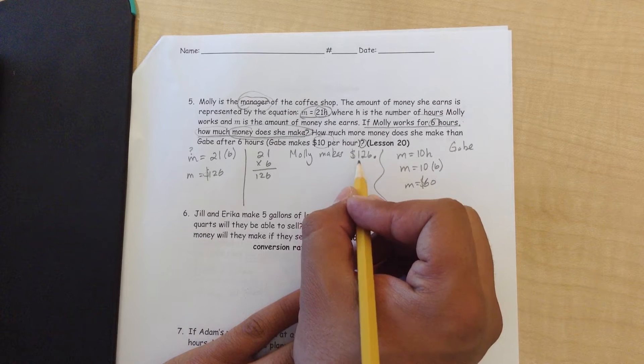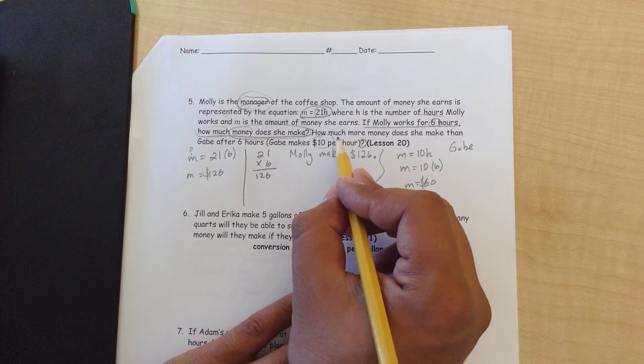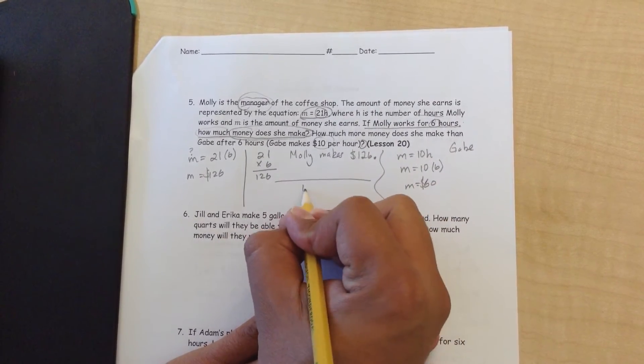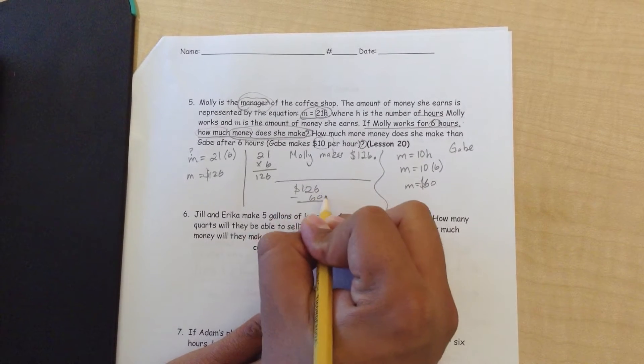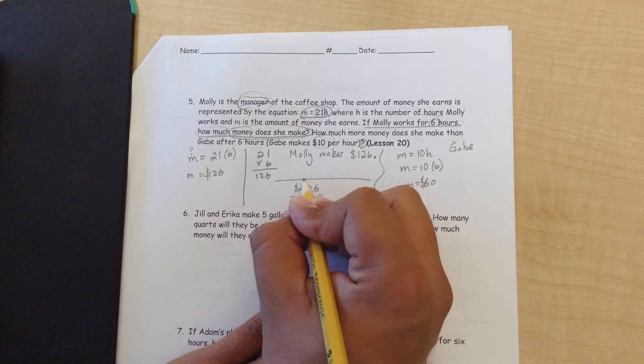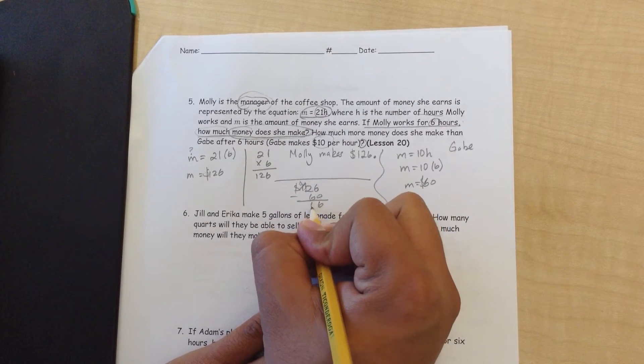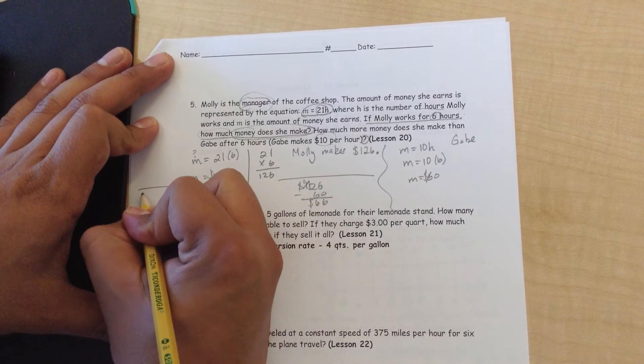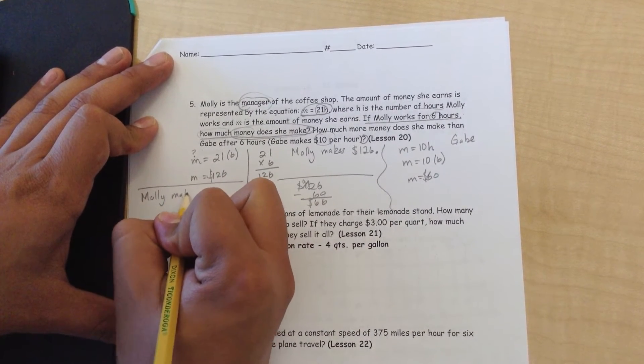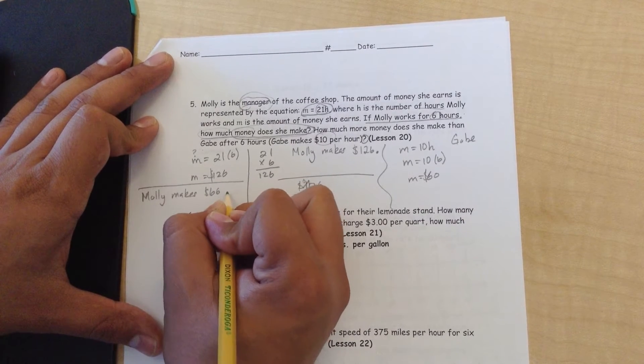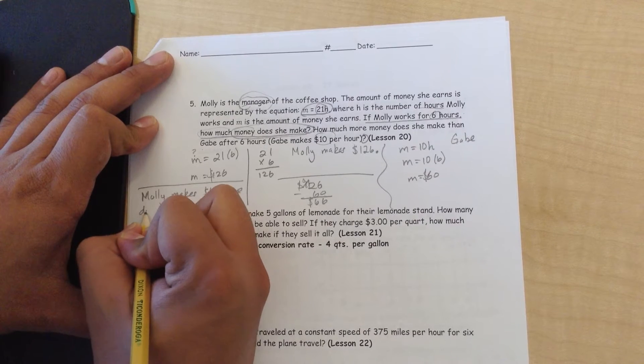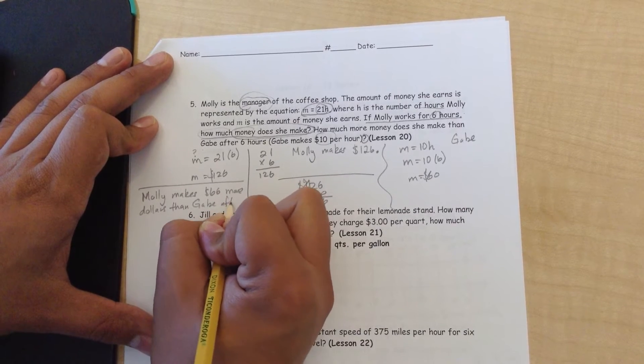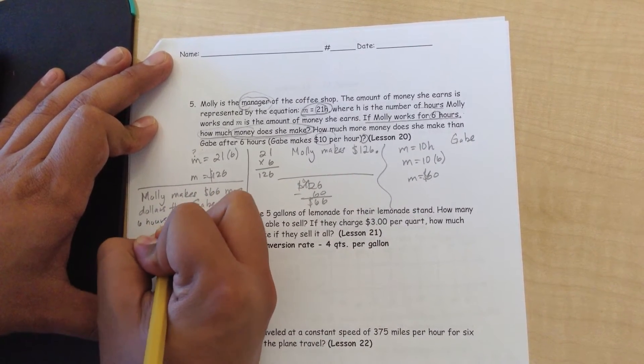How much more money does she make than Gabe after 6 hours? So, if they both work 6 hours, let's look at this. Let's just take this part right here. 126 minus 60. 6 minus 0 is 6. 2 minus 6, you can't do that. You're going to have to borrow. 12 minus 6 is 6. Molly makes $66 more dollars than Gabe after 6 hours of work.